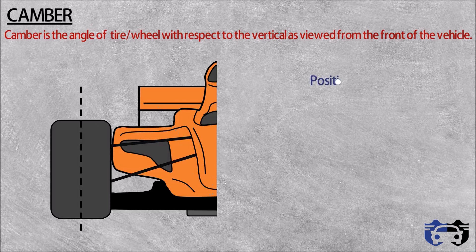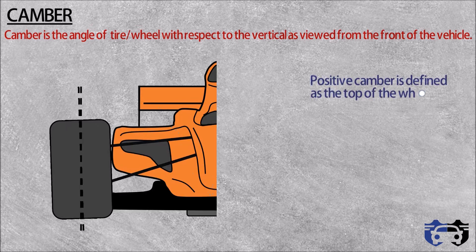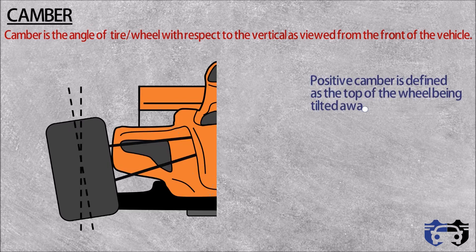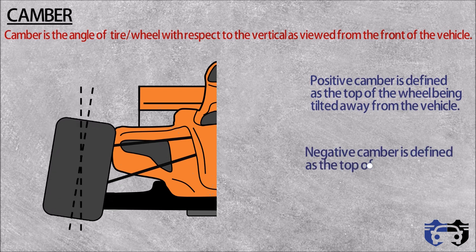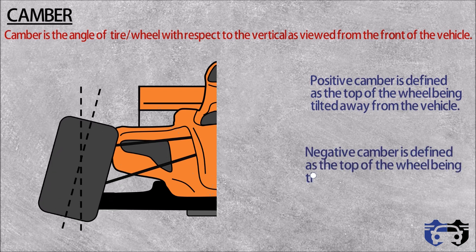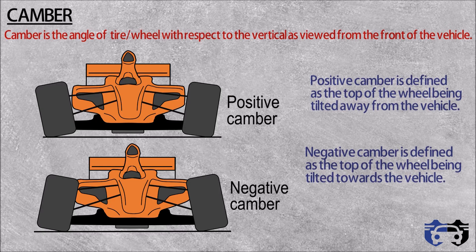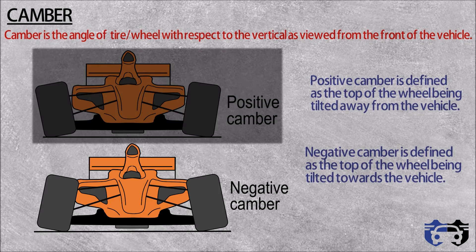Camber is the angle of the tire or wheel with respect to vertical, as viewed from the front of the vehicle. Note that camber angles are usually very small — I will exaggerate them here for better understanding. Positive camber is defined as the top of the wheel being tilted away from the vehicle, whereas negative camber is defined as the top of the wheel being tilted towards the vehicle. Most vehicles use positive camber.